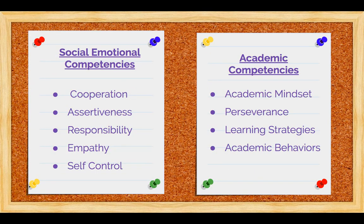The social emotional competencies named in Responsive Classroom are cooperation, assertiveness, responsibility, empathy, and self-control. You can relate those competencies right back to the CASEL core areas I read to you at the beginning. What I love about Responsive Classroom is it also asks those social emotional competencies to hold hands with academic competencies — which include academic mindset, perseverance, grit, learning strategies, and academic behaviors. Social emotional competencies and academic competencies are intertwined; you cannot have one without the other.